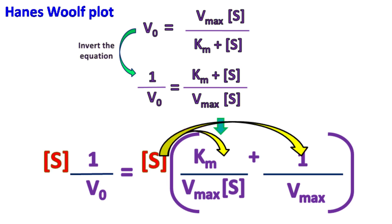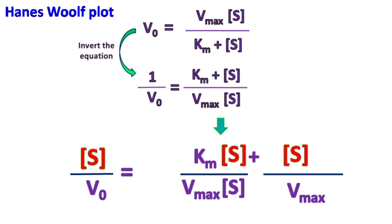Multiplying the term S on the right-hand side gives S by V0 is equal to Km upon Vmax plus S by Vmax.